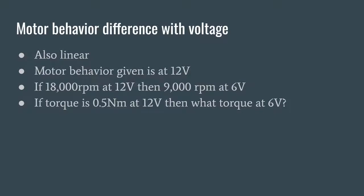And motor behavior based on voltage is also linear. So if I gave you the stall torque at 12 volts - let's say I said the stall torque at 12 volts was one newton meter. What would the stall torque be at six volts? It's linear. How about at three volts? Exactly.